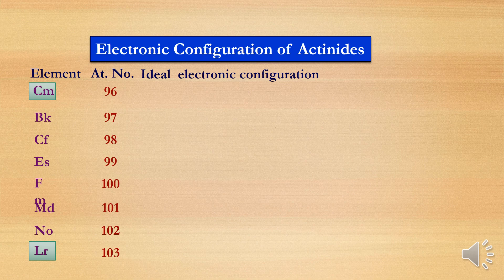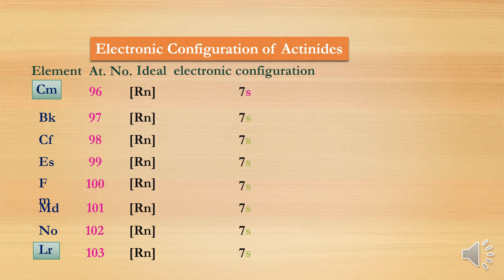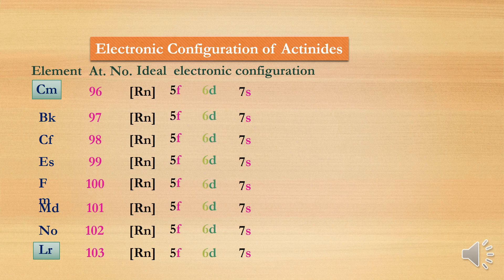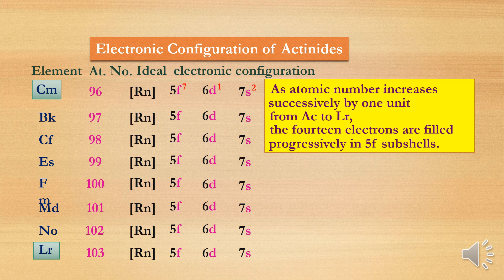Curium and lawrencium are two exceptional cases among these elements. In these two, there will be 5f, 6d, and 7s orbitals involved. Actinium has a vacant 5f orbital, while lawrencium has a completely filled 5f orbital with 14 electrons, making them extra stable.